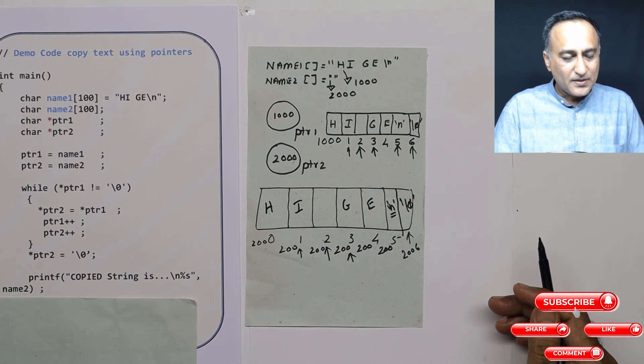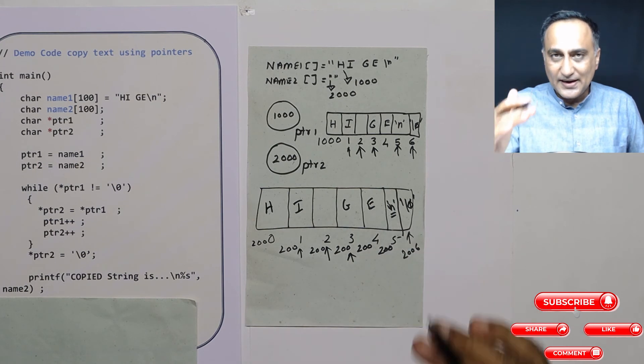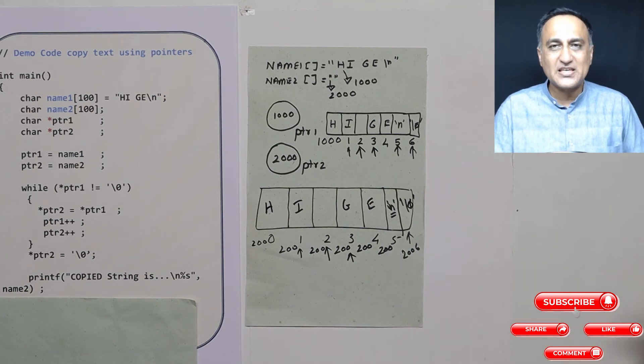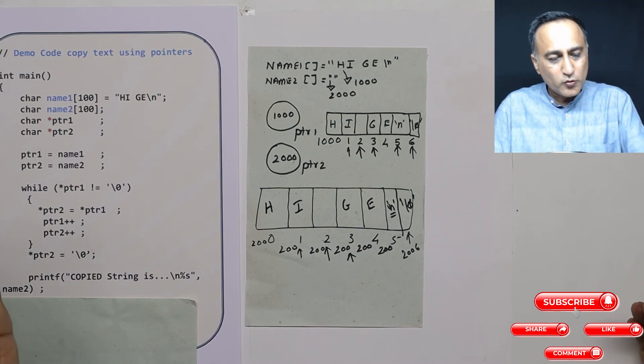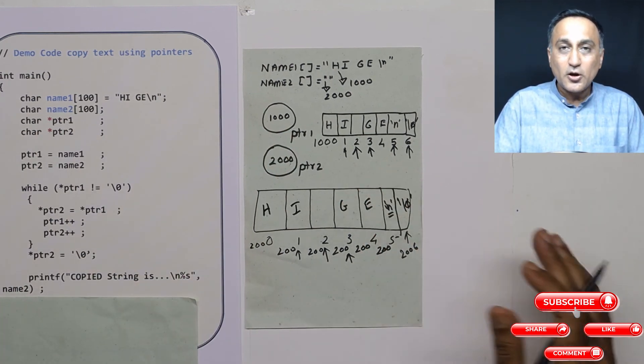And when I print name2, it is going to print this message: h, i, space, g, e, the enter key. And the null character is not going to be printed obviously because its ASCII value is 0 and it's a non-printable character. So this is how I showed you you can copy one string to the other using the concept of pointers.